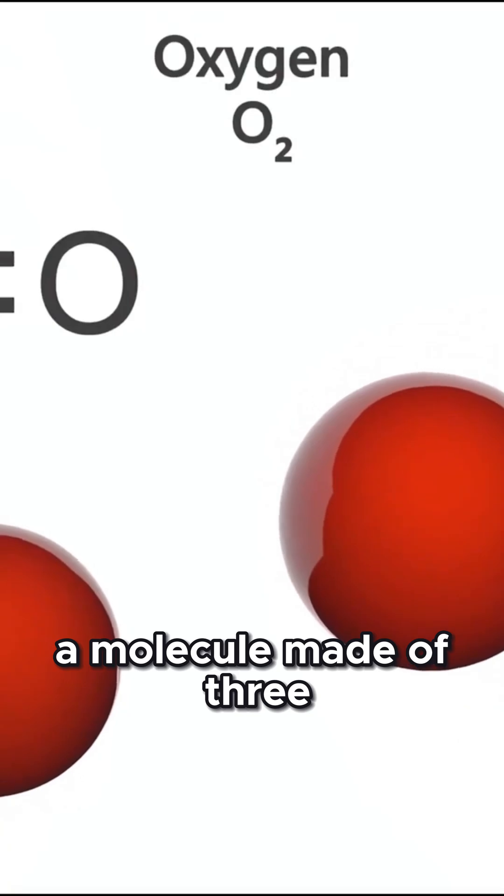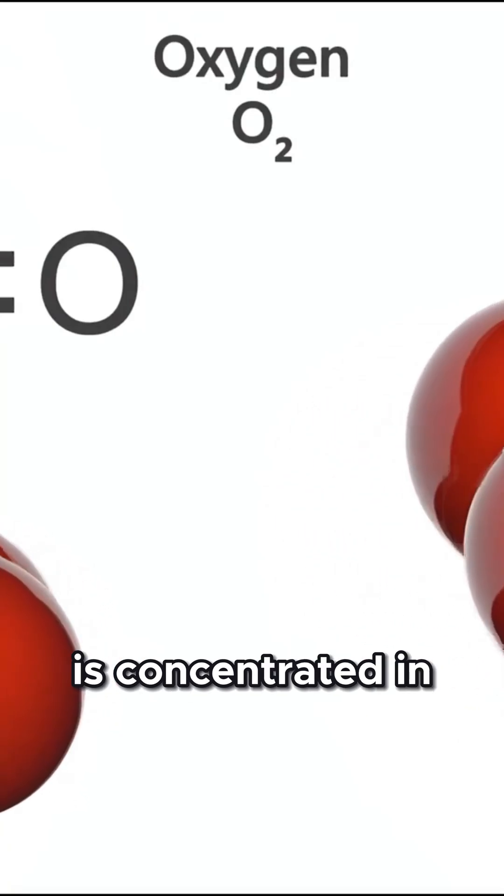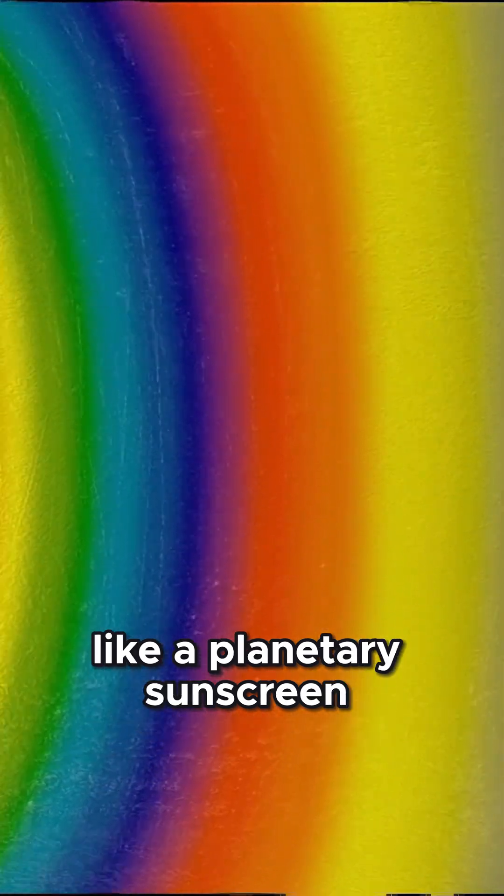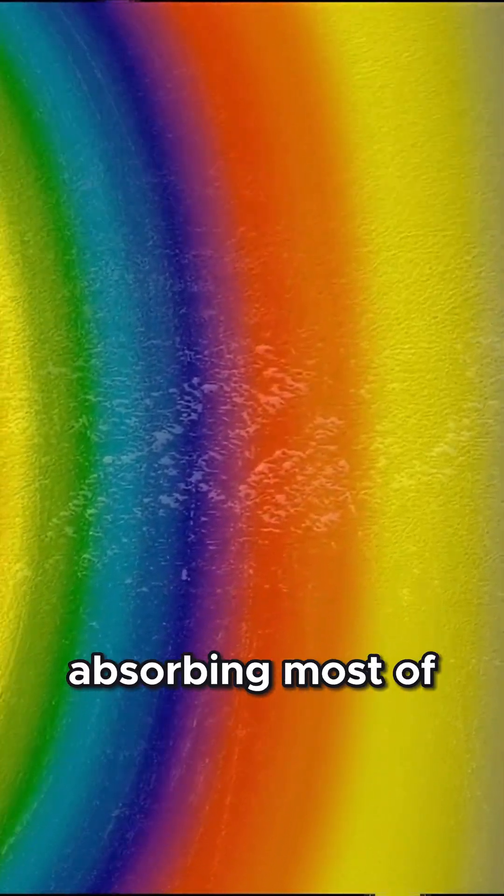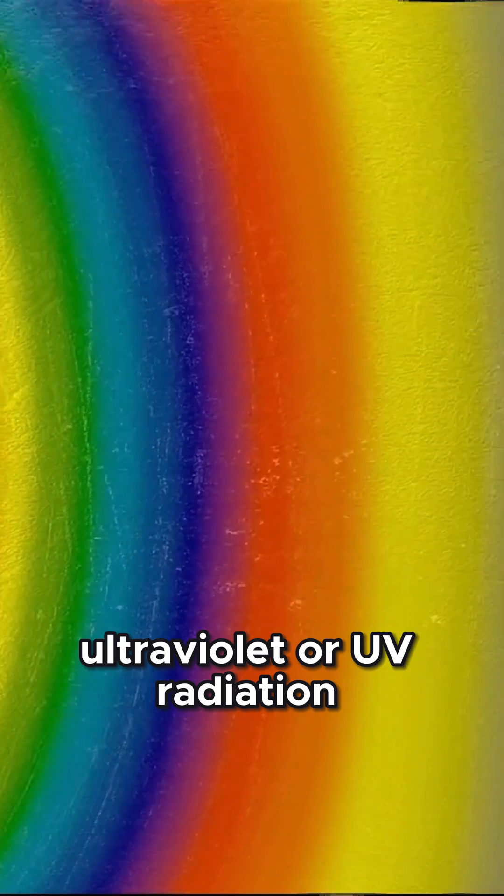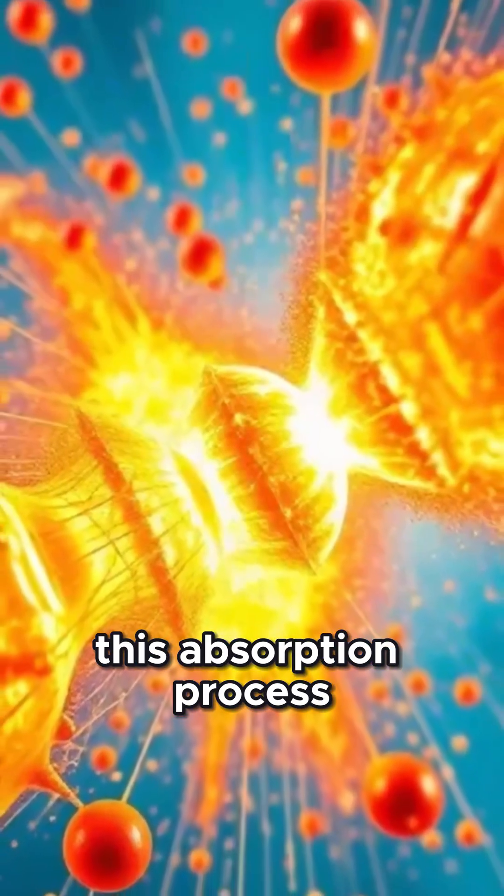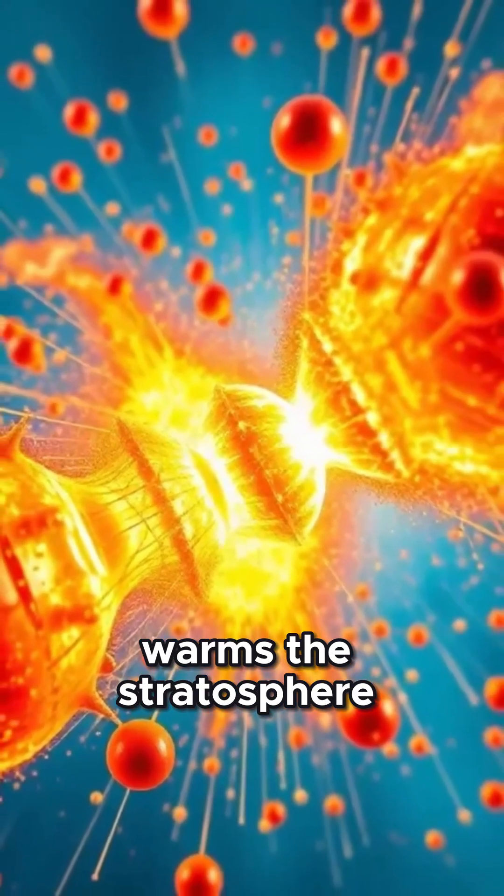It acts like a planetary sunscreen, absorbing most of the sun's harmful ultraviolet, or UV, radiation. This absorption process releases heat, which is what warms the stratosphere.